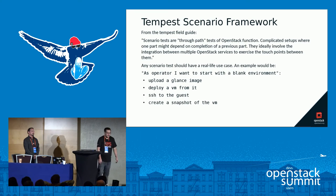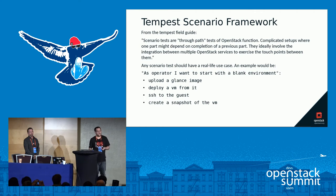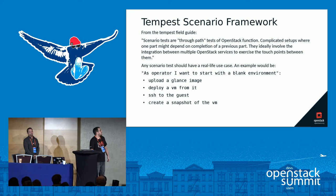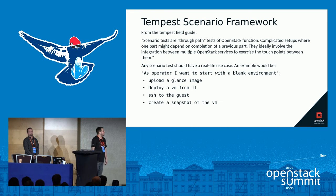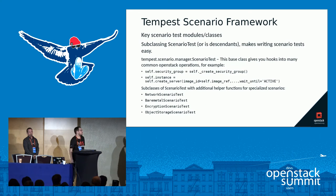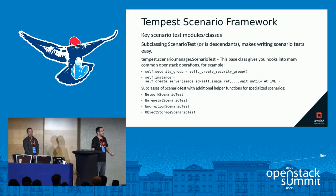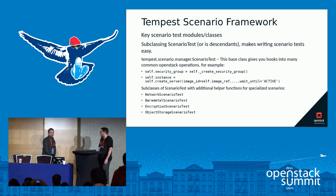Here's the fun part. Tempest uses all the APIs, and we have the split-repo plugin approach dropping tests like Sahara, Neutron, and so forth back to their projects. But what if you want to do a real-life example of a test? That's where we get the scenario tests — they do what a real-life use case would be: deploy a VM, upload an image, create a network, create a router, ping between instances, and so forth.